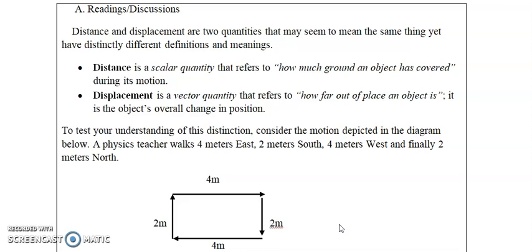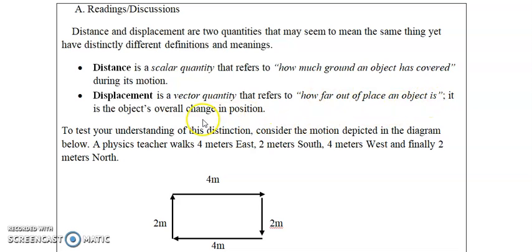Let's start by differentiating distance from displacement. Distance is a scalar quantity — it has only magnitude and is not direction-aware. It basically refers to how much ground an object has covered during its motion. Displacement, on the other hand, is a vector quantity — besides having magnitude, it is also direction-aware. It refers to how far out of place an object is.